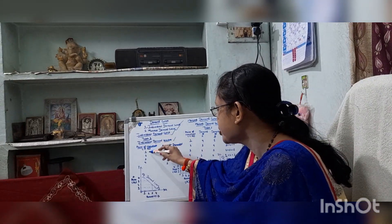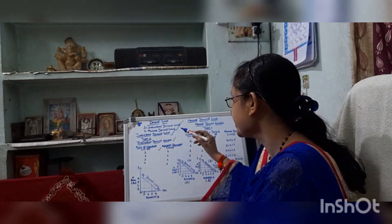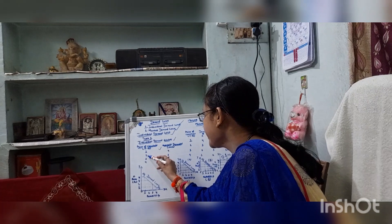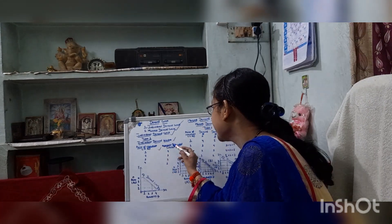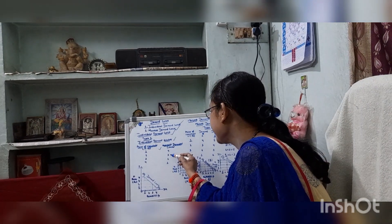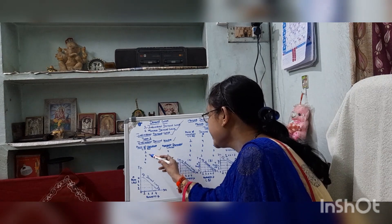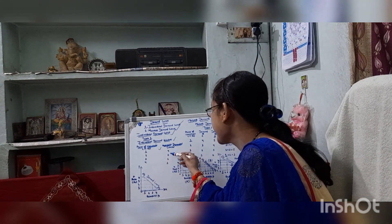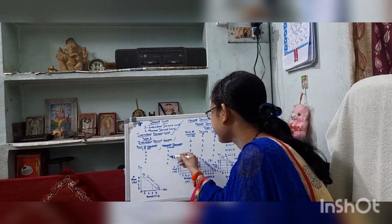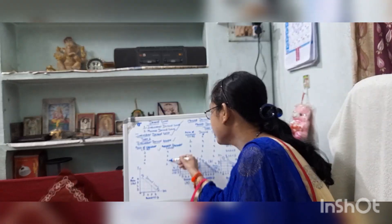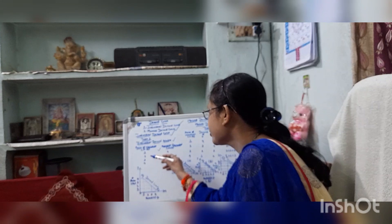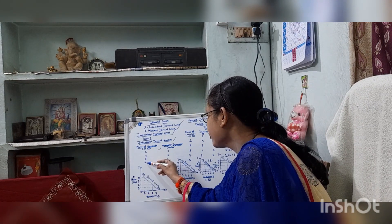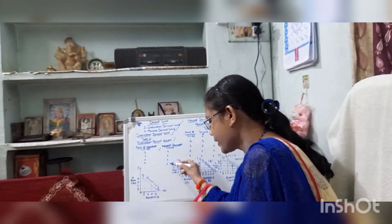When the price of chocolate is 1 rupee, then quantity demanded is 4. When the price is 2, quantity demanded decreases to 3. When the price increases to 3 rupees, quantity demanded decreases to 2. When the price increases to 4 rupees, quantity demanded is 1.